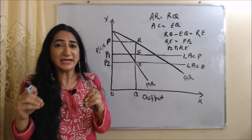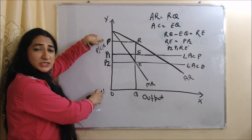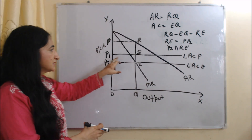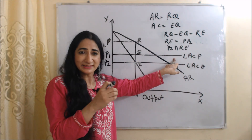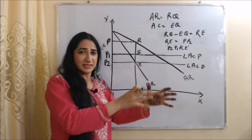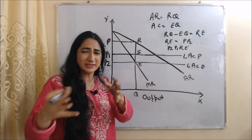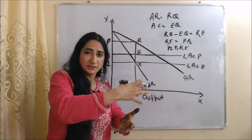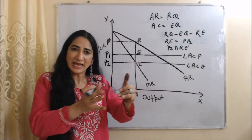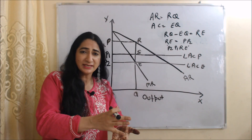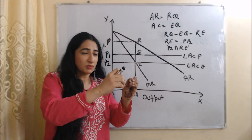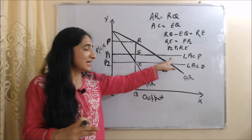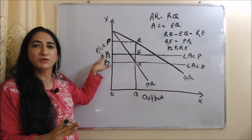In order to prevent the entry of new firms, existing firms are not going to charge OP price. They will charge OP1 price, because OP1 price is equal to the cost of new firms. At this price, if a new firm enters the market, they will not earn any super normal profit — just normal profit, because price equals cost. And after a certain moment, their normal profit will also go, as supply increases, price falls, profit falls, and they will incur losses and leave the market. That is why OP1 price is not beneficial for new firms.